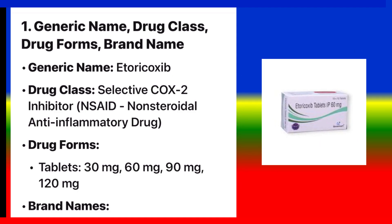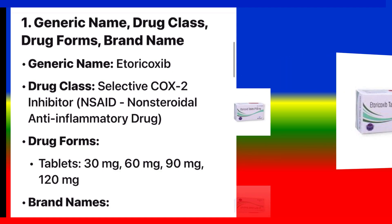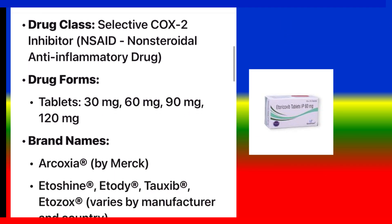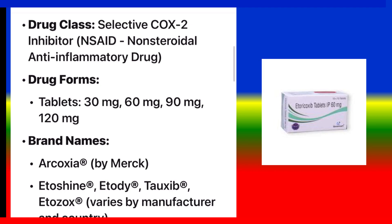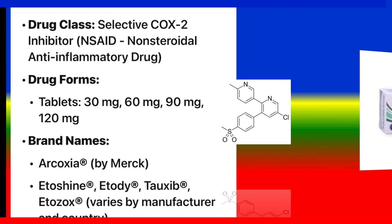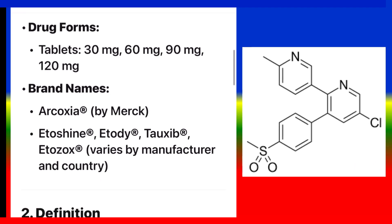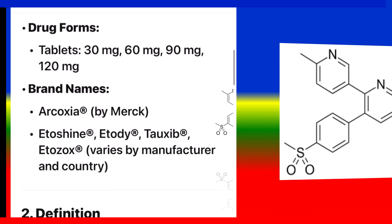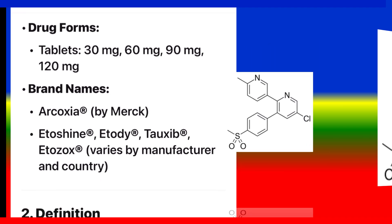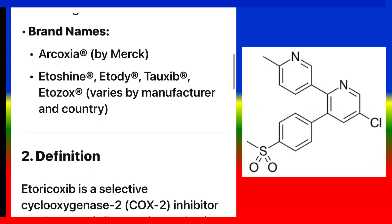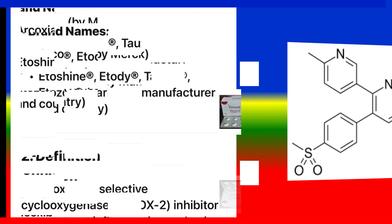Drug class: selective COX-2 inhibitor, NSAID (non-steroidal anti-inflammatory drug). Drug forms: tablets — 30 mg, 60 mg, 90 mg, 120 mg. Brand names: Arcoxia by Merck, Etoshine, Etotitoxib, Etozox — varies by manufacturer and country.